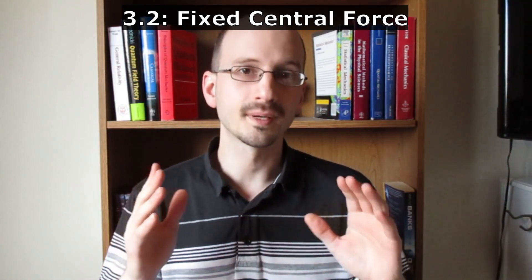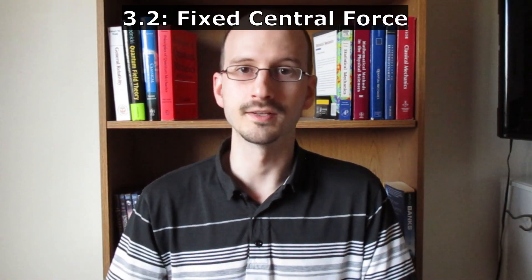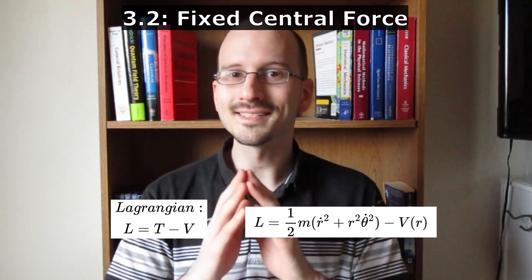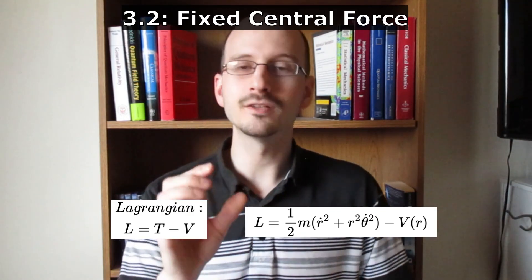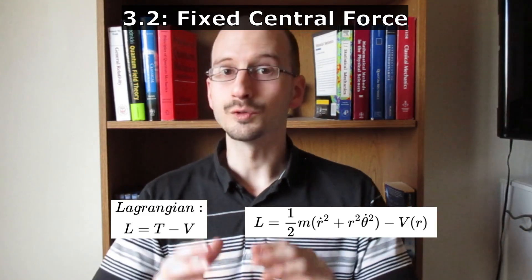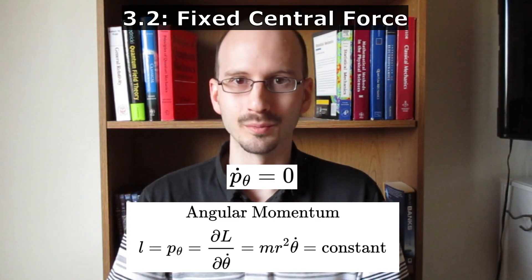In chapter 2, we talked about cyclic coordinates leading to a conservation of generalized momentum. If we write the Lagrangian for the central force, we can see that it doesn't depend directly on theta. It depends on theta dot, but not theta, which means theta is cyclic and something is conserved. That conserved quantity is the angular momentum.